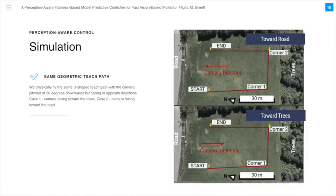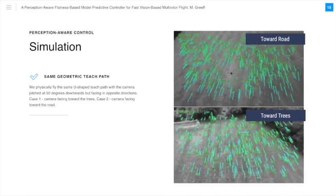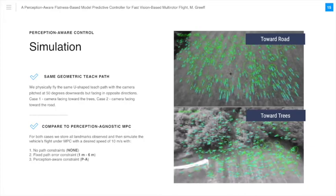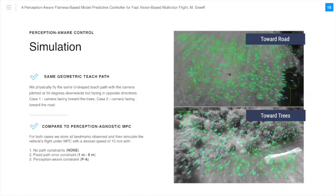To test our controller, we start by physically flying the same U-shaped teach path with the camera pitched at 50 degrees downwards, but facing in opposite directions. In case one, the camera is pointed towards the trees. In case two, the camera is facing towards the road. For both cases, we store all visual landmarks observed, and then simulate the optimal path flow with a desired speed of 10 meters per second and a model predictive control with no path error constraints, fixed path error constraints of between 1 and 6 meters, and our perception-aware constraint.